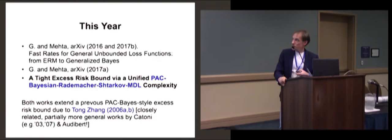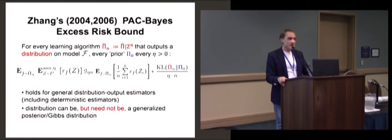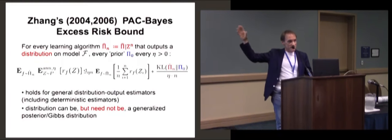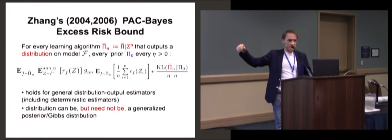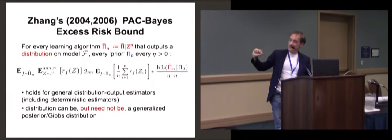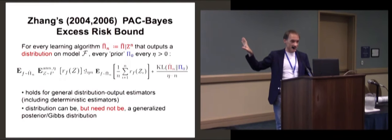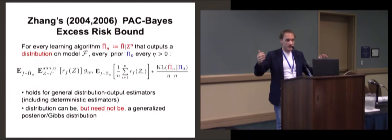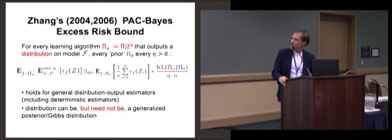The remainder of this talk will be basically just about this formula, which at this point will look very complicated, and I will guide you through it slowly. This is Zang's excess risk bound. Once we understand that, we can work towards generalizations. It's important to pay attention the coming few minutes when I explain this — it looks daunting now, but I will slowly make it more palatable.